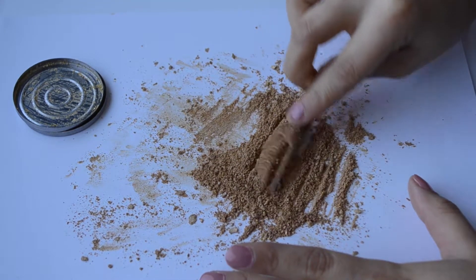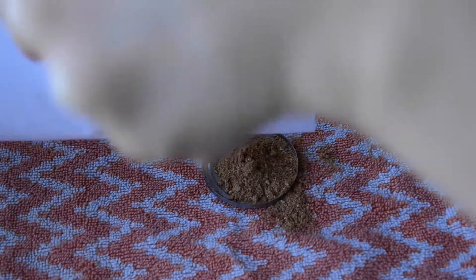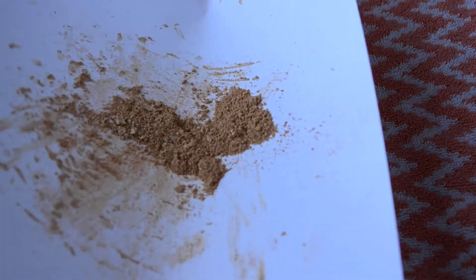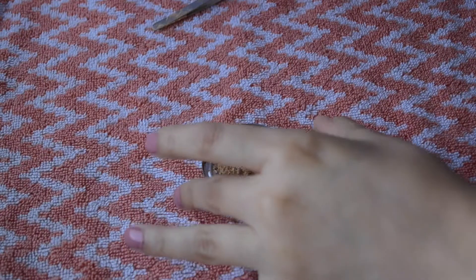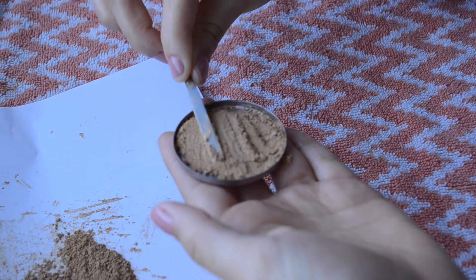So now that I have finely milled the highlighter, I am going to start to use the paper as my funnel by just folding both sides of the piece of paper and dispersing the product back into the pan. You want to dump the highlighter in sections, that way you can flatten out the product and then dump more as you go.